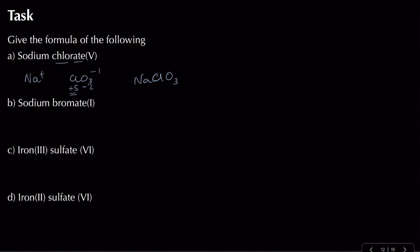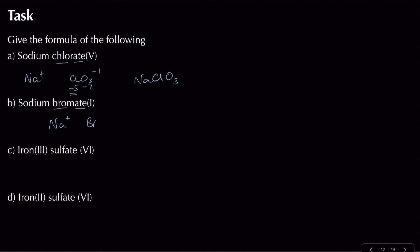For sodium bromate(I): sodium is plus one, bromate contains bromine and oxygen, and bromine has an oxidation state of plus one. The ion must be minus one. To get from plus one to minus one requires minus two, so just one oxygen. The formula is NaBrO.